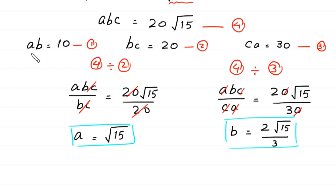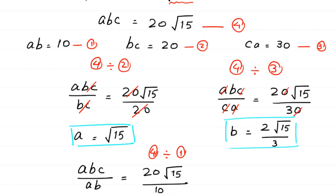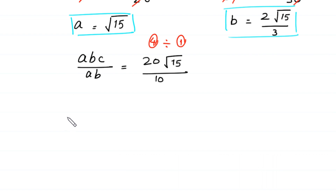To find the value of c, we divide equation 4 by equation 1. Left side of equation 4 is a·b·c divided by a·b equals 20√15 divided by 10. The a·b cancels on the left, leaving c equal to 20√15 divided by 10, which gives 2√15. This is the value of c.